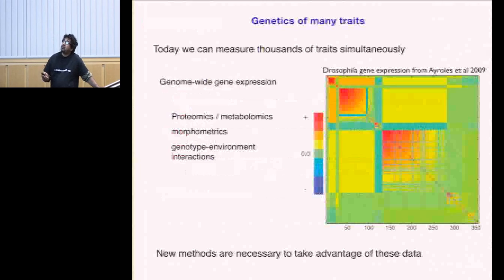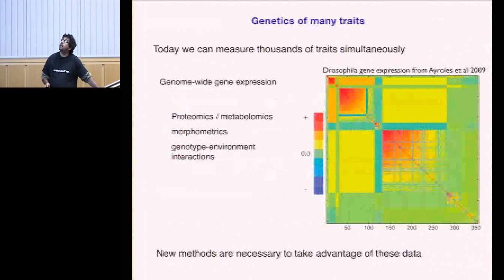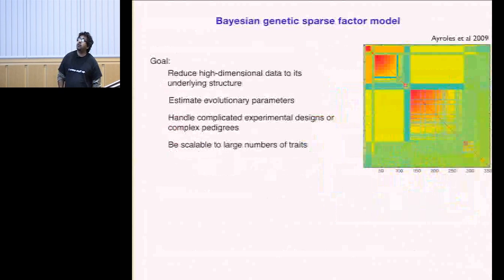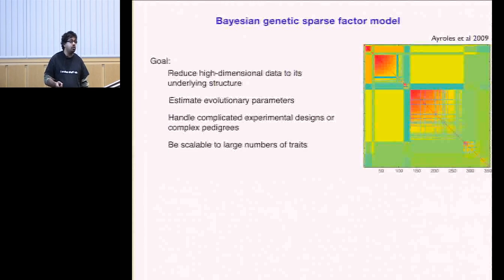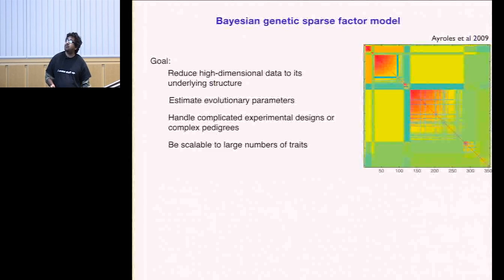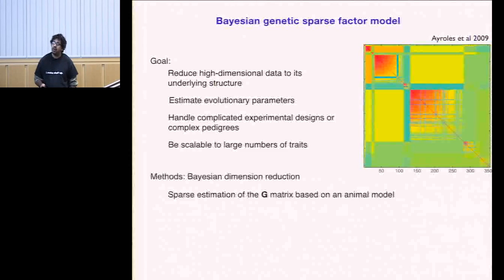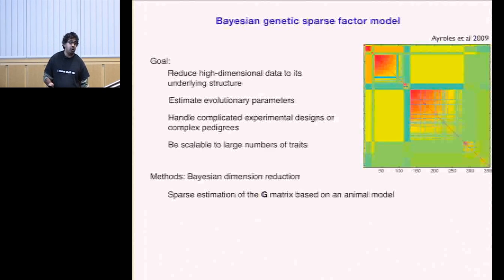My traits are gene expression, and increasingly we're looking at things like proteomics and metabolomics. The challenge is taking advantage of complicated traits measured simultaneously. One idea is to reduce high-dimensional data into underlying structure using factor models. We want to estimate possibly evolutionary parameters like heritability, handle complex experimental design or pedigrees, and be scalable to large numbers of traits. We'll use a Bayesian method to get sparse estimation of the G matrix, based on something called the animal model, applied to gene expression.